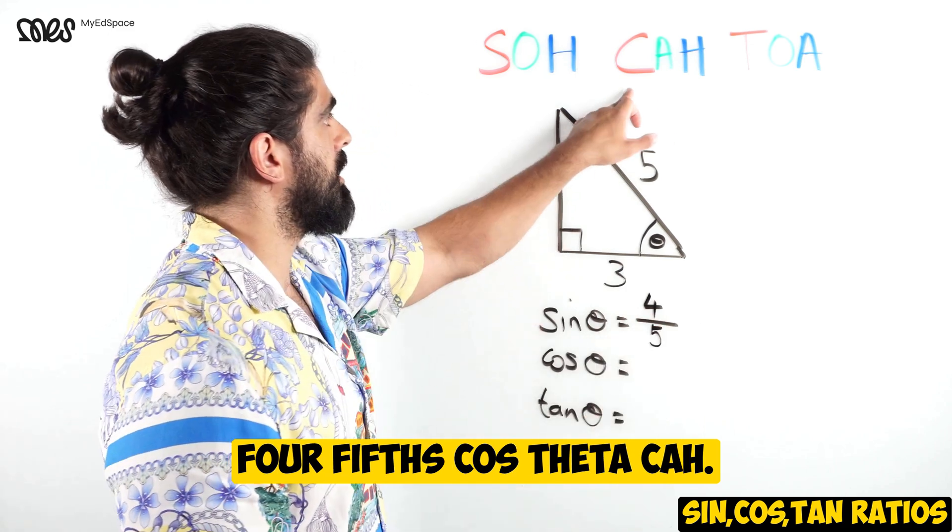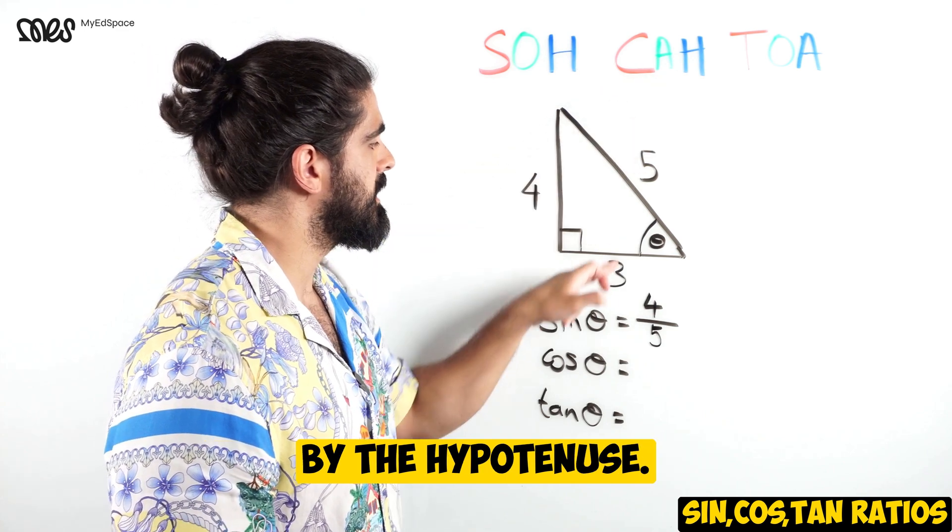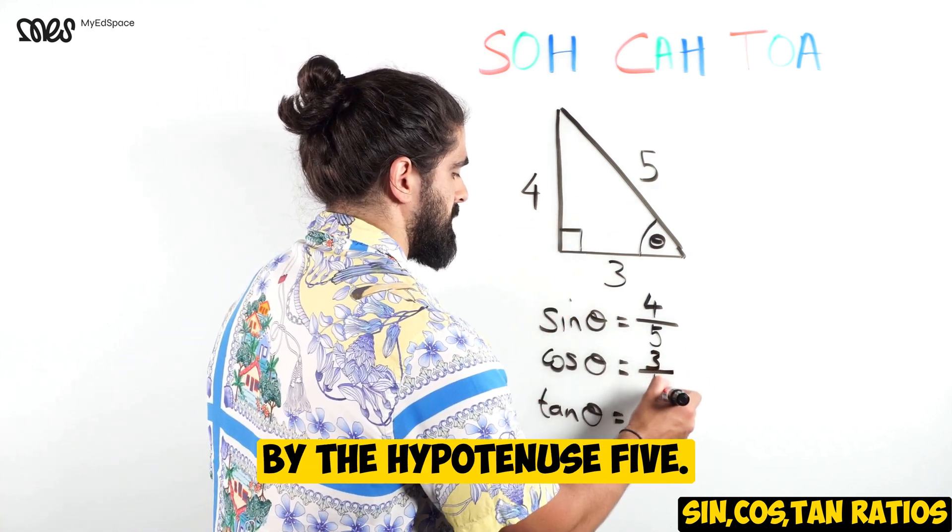Cos theta - CAH. Cos is the adjacent divided by the hypotenuse. The adjacent is three divided by the hypotenuse, five.